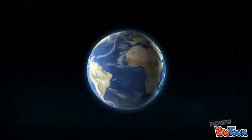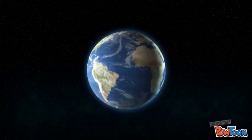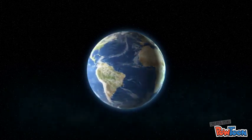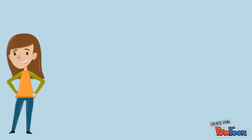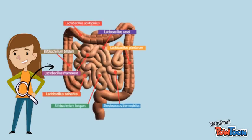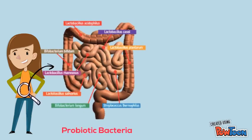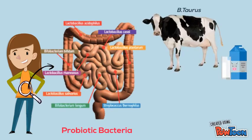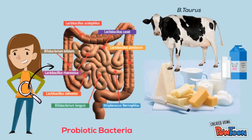Their geographical distribution is worldwide. Locally, they can be found in the gastrointestinal system, meaning that they are probiotic bacteria. They can also be found in fermented milk products, such as milk and cheese.